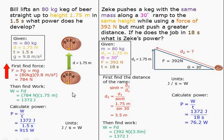Bill lifts an 80 kilogram keg of beer straight up to height 1.75 meters in 1.5 seconds. What power does he develop?